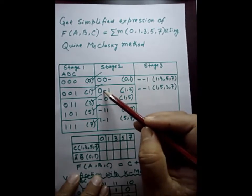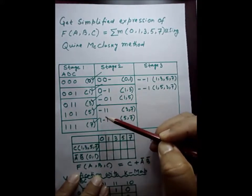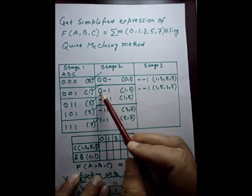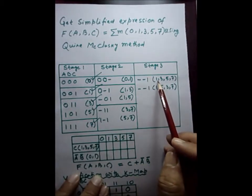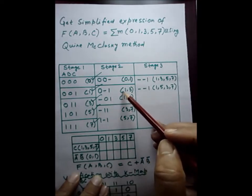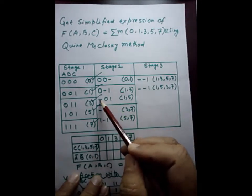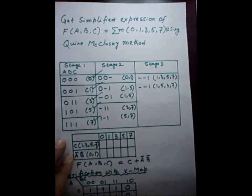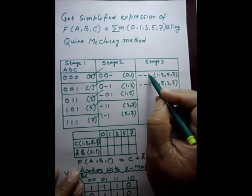The first element has a dash in the second place, and this element also has a dash in the second place. After this mapping, we get dash-dash-1, because A gets eliminated. We write in brackets what has been used: 1, 3 and 5, 7. Then we map the second element of the second group. There is a dash in the first place, and here also a dash in the first place. After mapping, we get dash-dash-1, which represents C.